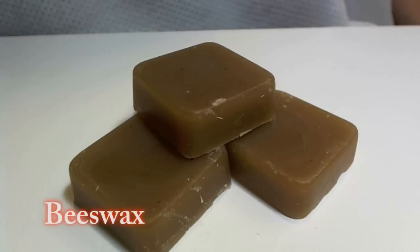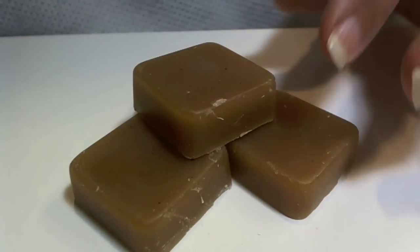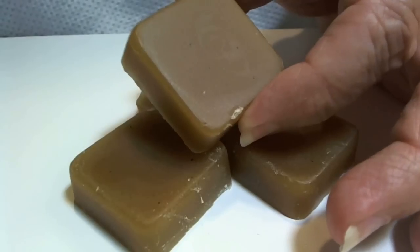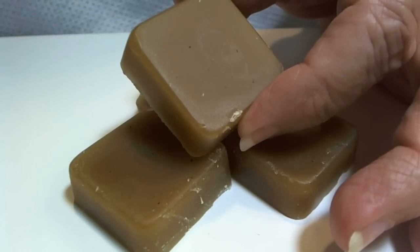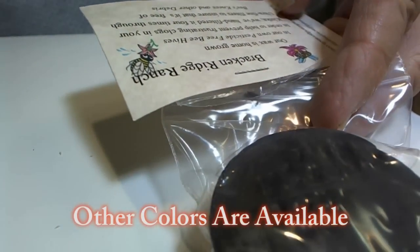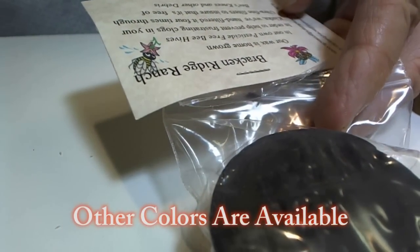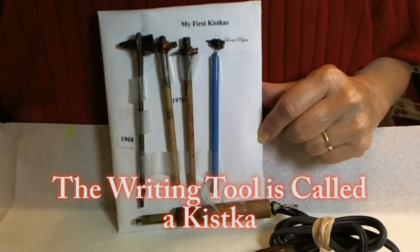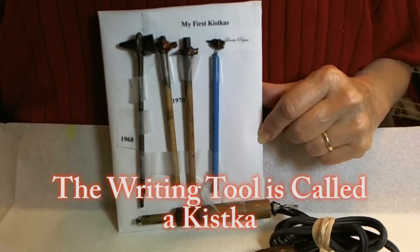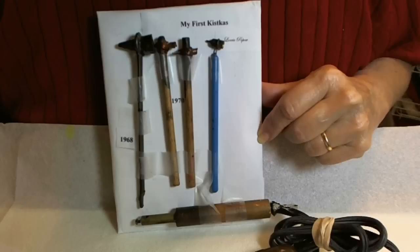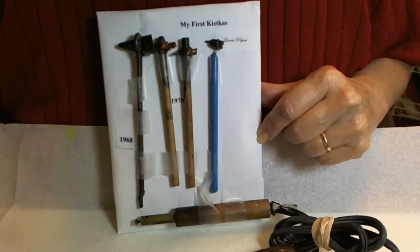We use beeswax to write our designs. As you can see, the beeswax is this yellow color. You can buy from many of the different suppliers. We write our designs on the eggs with a tool called a kiska. There are several different types of tools available on the market today.